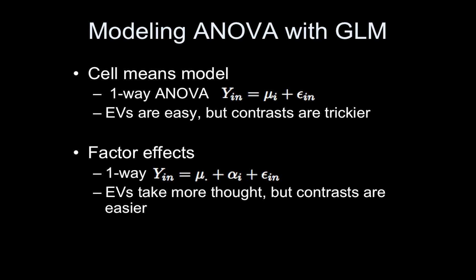The factor effects model, on the other hand, looks like this — maybe you've seen this equation before. You start with an overall mean, which is always modeled with a column of ones. Then you have a factor that models basically how each level differs from the overall mean. So it's a slightly different approach. I will have a figure that illustrates this in a little bit. The regressors in this setup need a little more thought.